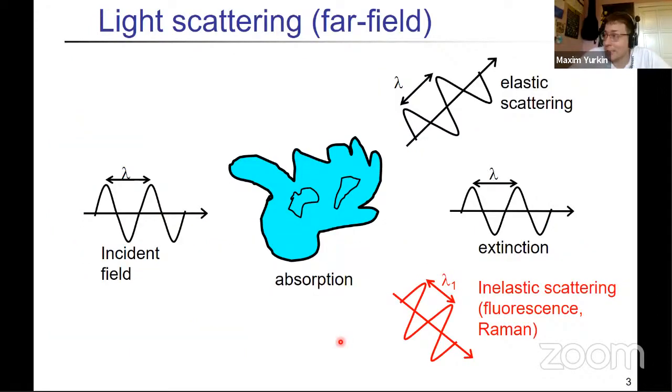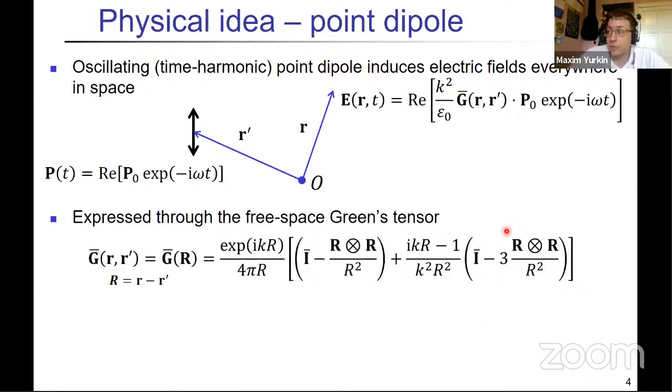So we're talking about the light scattering or general interaction of electromagnetic fields with particles, and commonly we consider only elastic scattering. And the physical origin of the DDA comes from a very simple concept that if you have a point dipole in frequency domain, you know everything about the field. So some formulas are shown here, but basically this is the main free space Green's tensor, which is like the most complicated function in the DDA, and it's still, you see, not complicated at all.